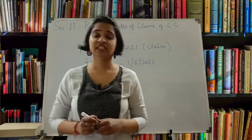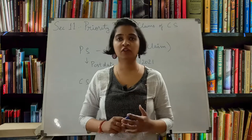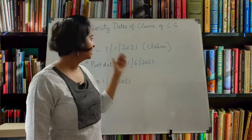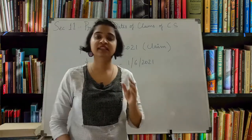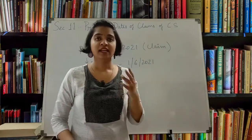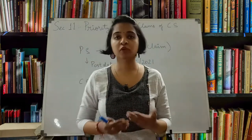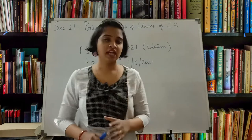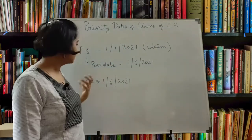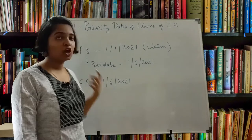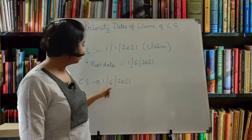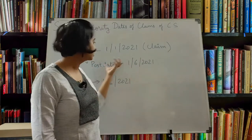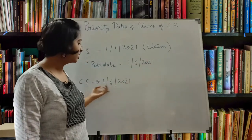In the previous class I mentioned post-dating of specifications. In case you are filing a provisional specification on 1-1-2021 mentioning a claim, and later you request post-dating and the post-date is set to 1-6-2021, then when you file the complete specification, the priority date for that claim will be 1-6-2021 and not 1-1-2021. So the date on which it was post-dated becomes your priority date for that claim.